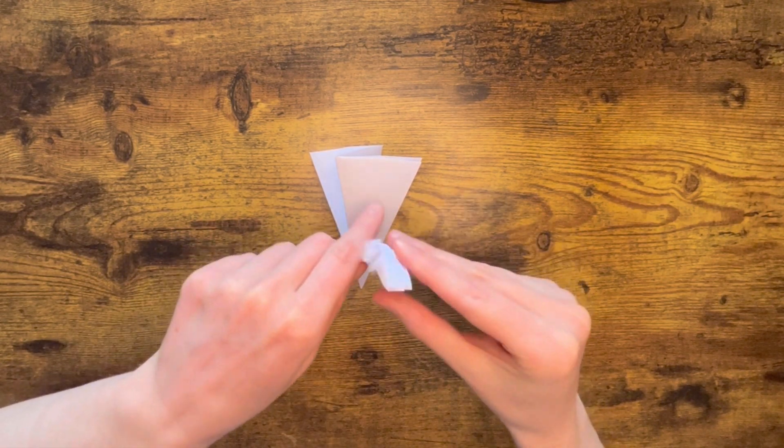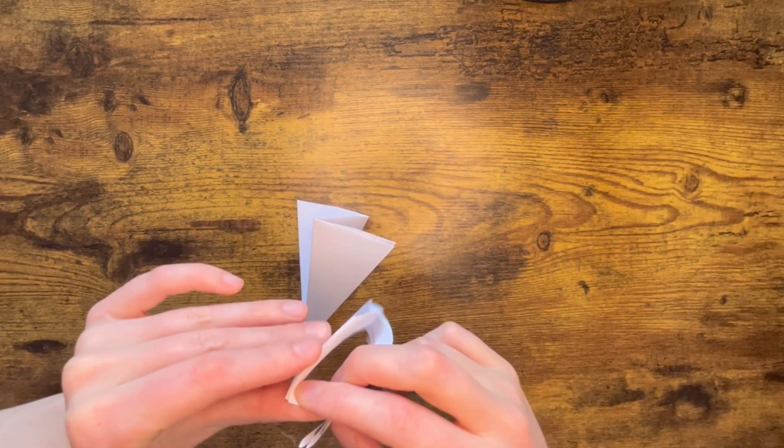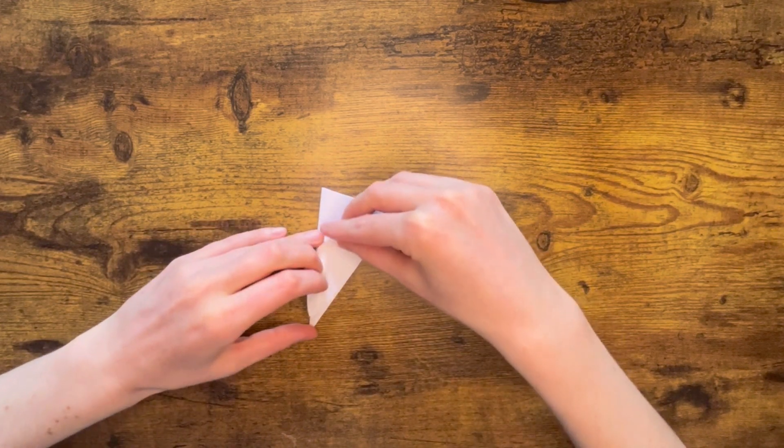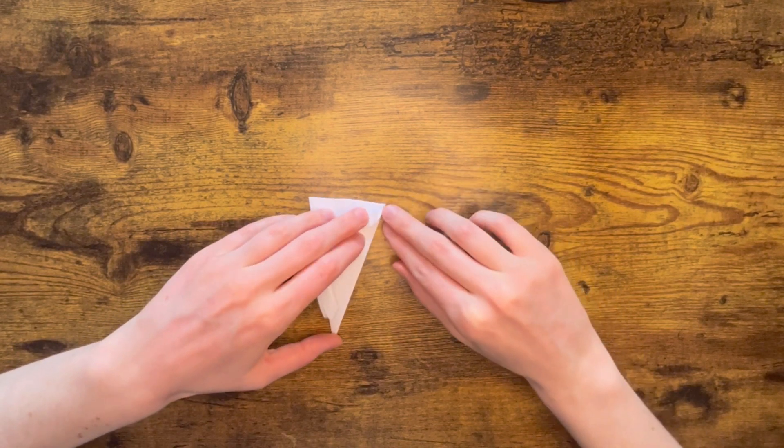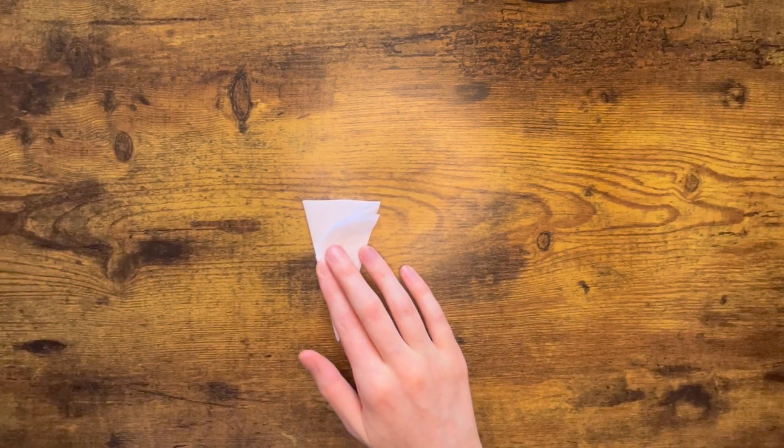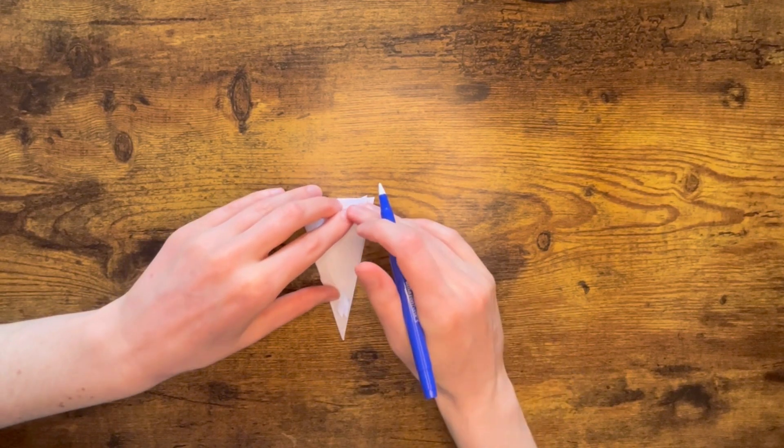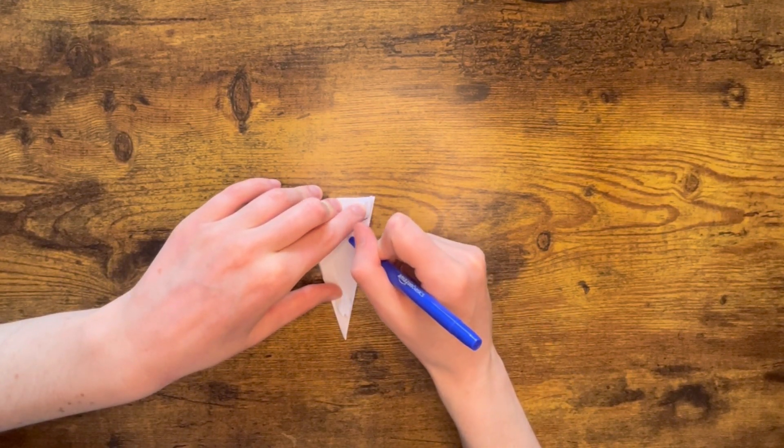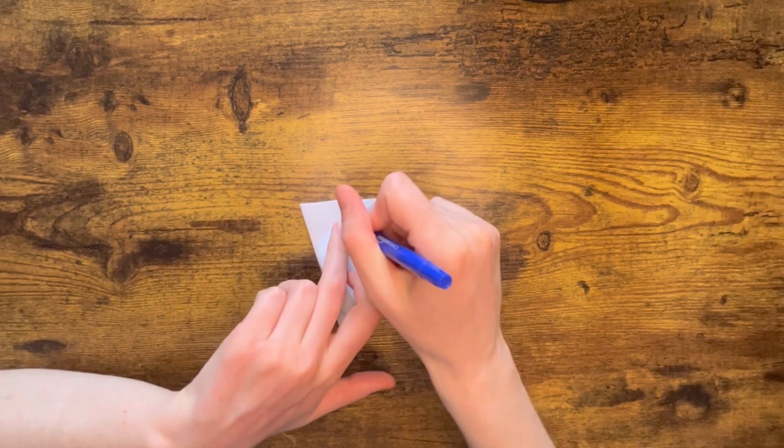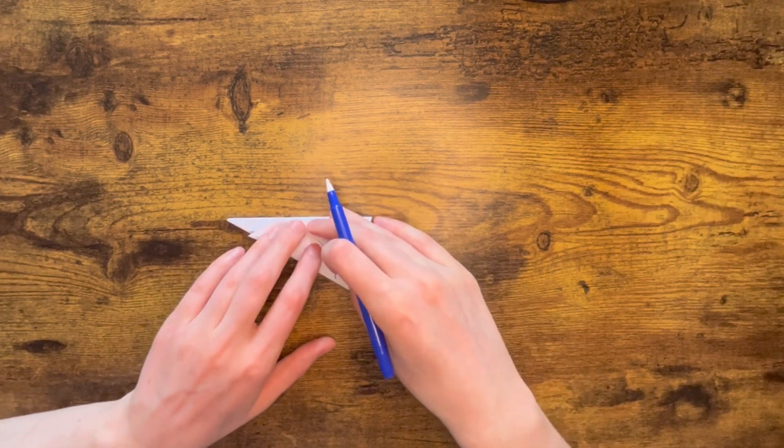So here's my pattern from earlier and I'm just going to quickly trace this pattern onto my snowflake. So I'm going to line up those edges to make sure that it's all working out. And grab a pen and you can make your flower as thick or as thin as you want it to be.